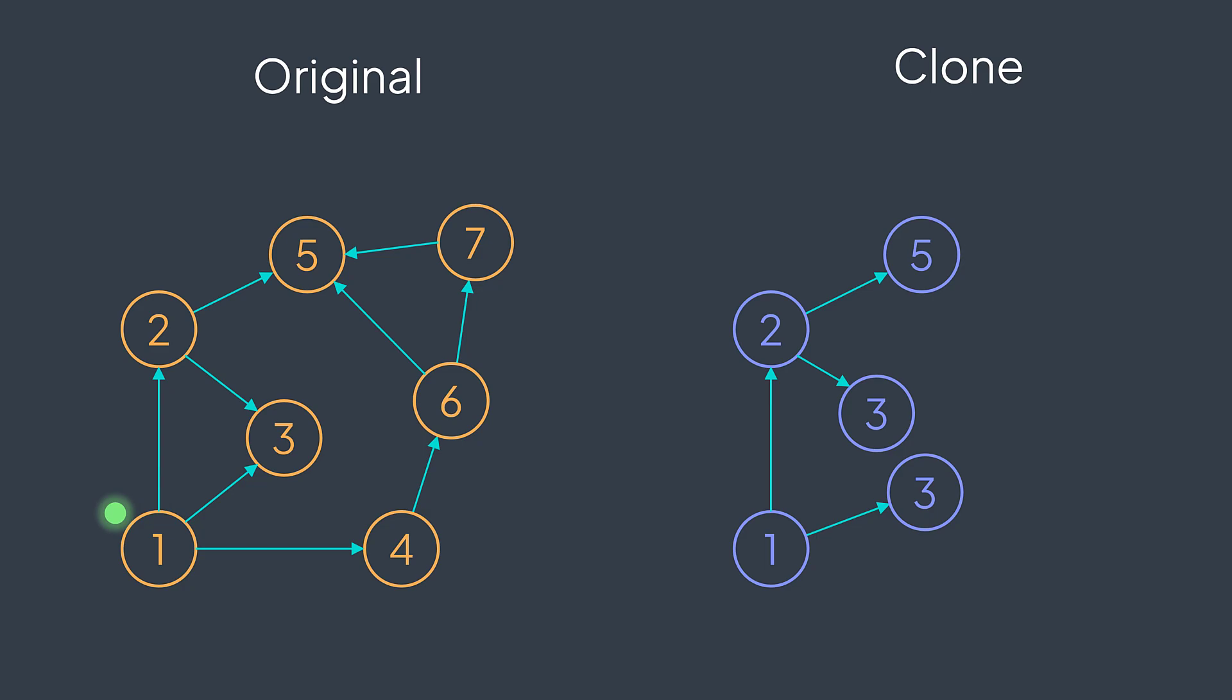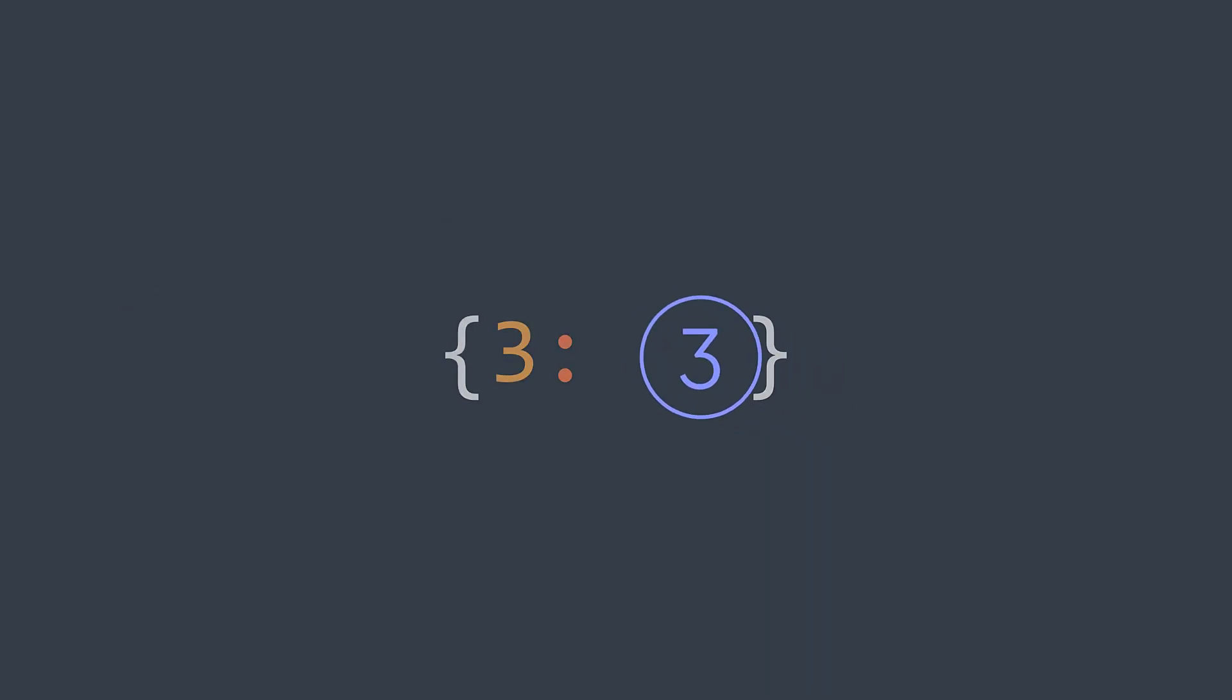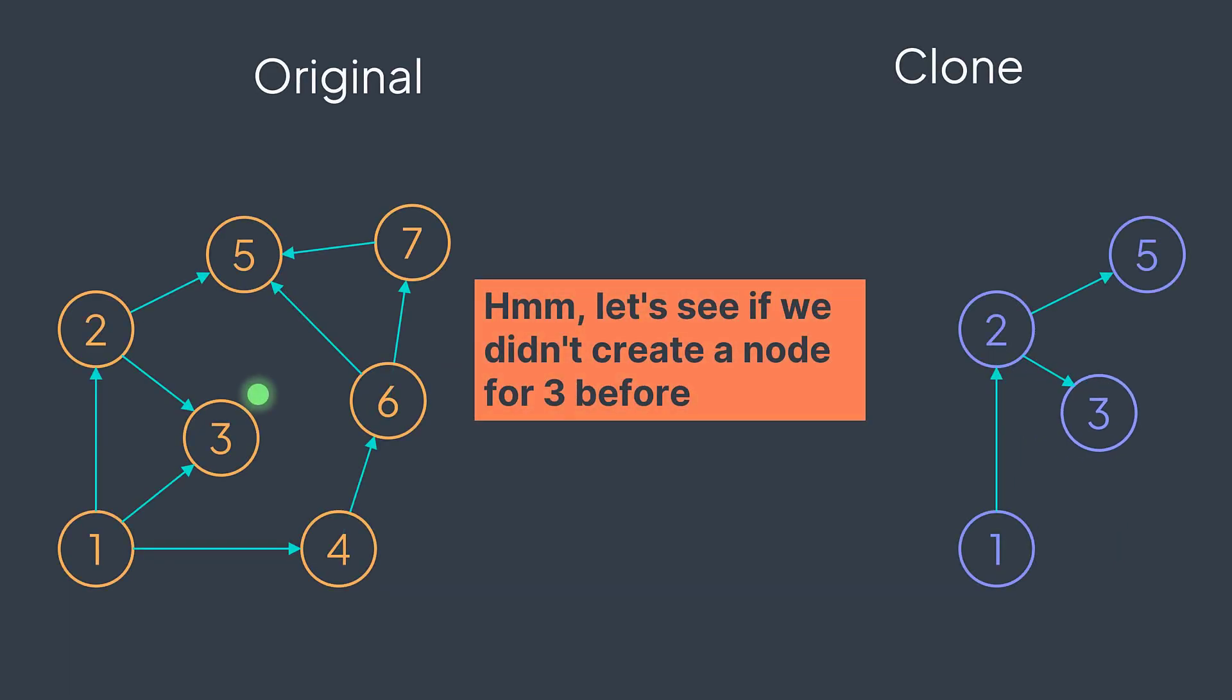Well, we want to clone a node only once, not more. So the solution is that once we clone the value three, for example, we store its reference in a hash table. And every time we found the value three, we first check if we didn't clone it before. So that instead of creating again a new node, we just take the one we created before.